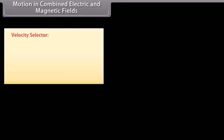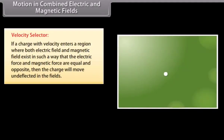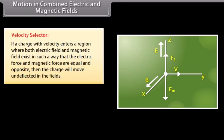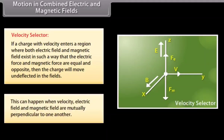Motion in combined electric and magnetic fields — Velocity selector: If a charge with velocity enters a region where both electric and magnetic fields exist such that the electric force and magnetic force are equal and opposite, then the charge will move undeflected. This can happen when the electric field and magnetic field are mutually perpendicular to one another.